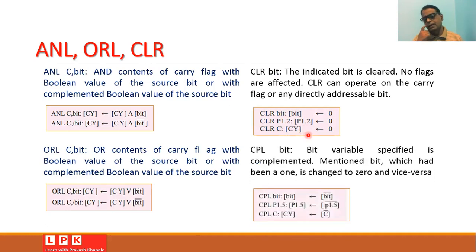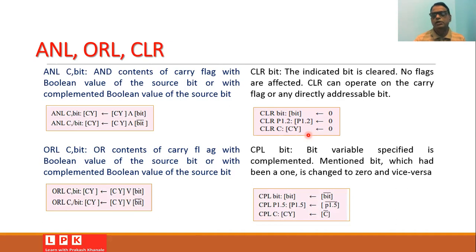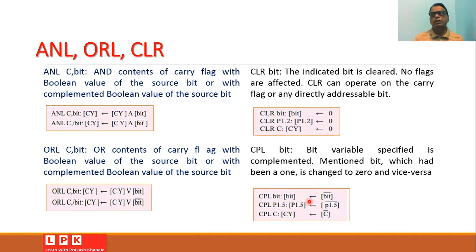Another instruction is CPL bit — the bit-addressable variable specified is complemented. If the bit is one it becomes zero, and if it is zero it becomes one. For example, CPL bit complements the specified bit. CPL P1.5 complements the fifth bit of port 1. CPL C complements the carry flag.